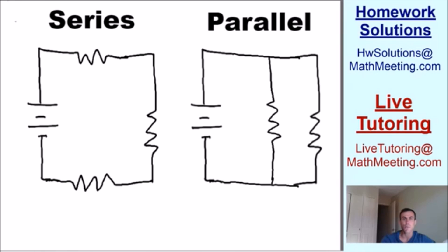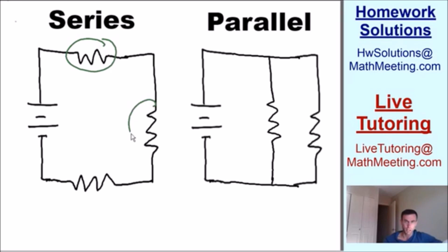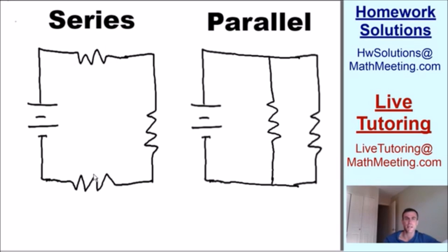Let's not waste any more time and let's get started right away. So let's start on the left hand side of the screen and talk about a series circuit. The reason why it's a series circuit is because all of these resistors — these squiggly lines — they're all in series with one another. So that's why it's called a series circuit.